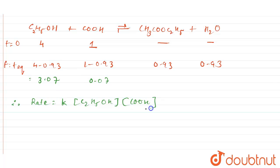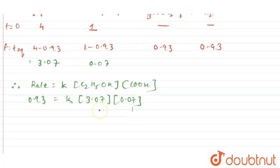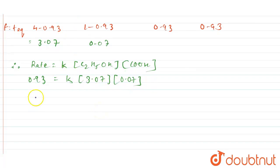So that is going to equal this rate, we can take this value, that is 0.93. C2H5OH is 3.07 and COOH is 0.07. So this value when you calculate is K equals 3.07 times 0.07, which is 0.2149.